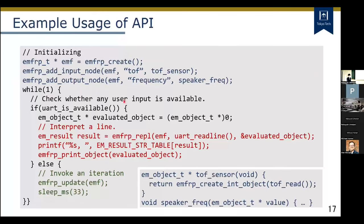These program lines initialize MFRP-Level. MFRP-add-input-nodes and MFRP-add-output-nodes define input and output nodes. The third argument is a callback — the sensor callback receives values from the sensors, and the speaker callback sends the value to the buffer. For reading user input, a function checks whether user input is available via the serial interface. If input arrives, MFRP-Level reads the line and evaluates it. If nothing arrives, MFRP-update executes an iteration.